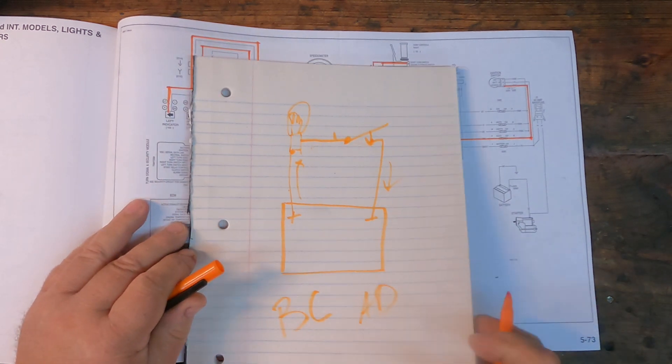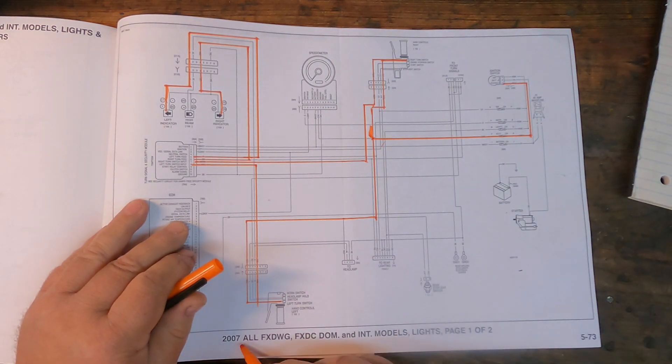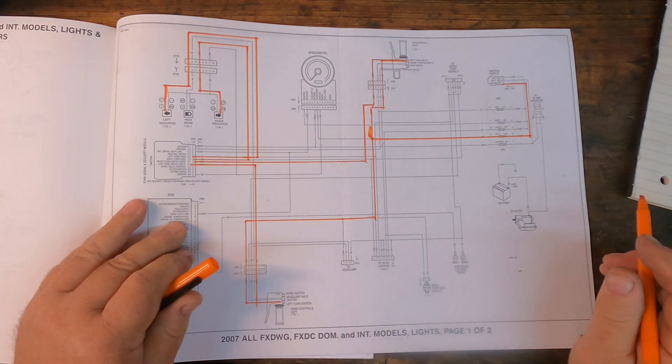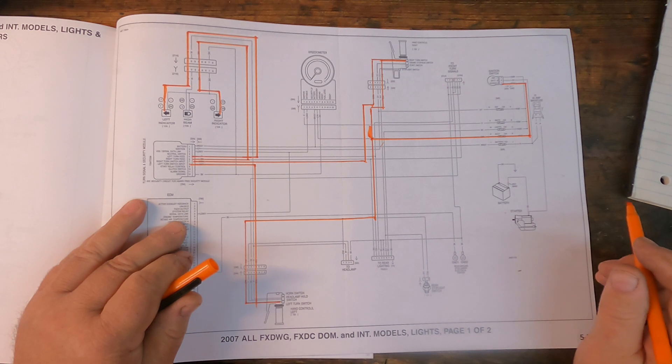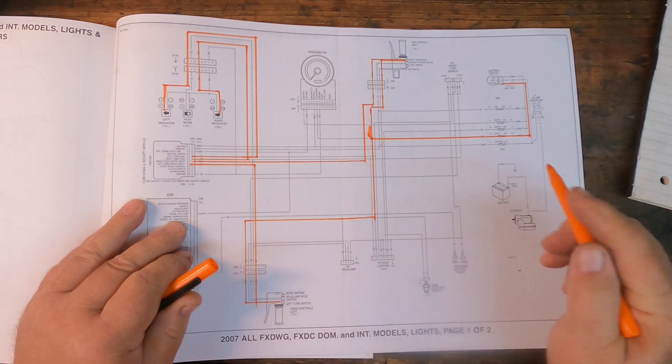And just to give you a kind of a point of reference, this is a diagram from a 2007 FXD. And this is the conventional BC method of doing things.